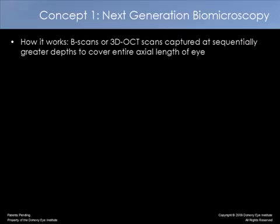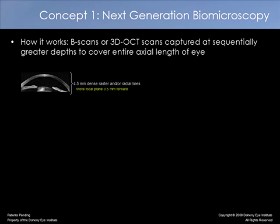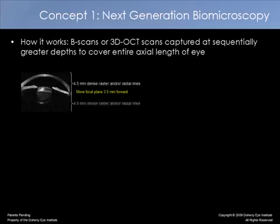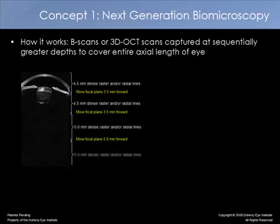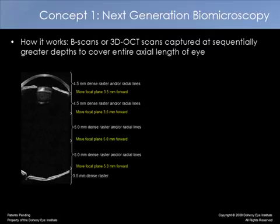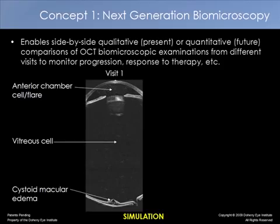How would it work? B-scans or 3D OCT scans could be captured sequentially at greater depths each time to cover the entire axis of the eye. What you see here is a scan of the anterior segment. The machine moves the focal plane back a few millimeters, scans the lens, moves back a few millimeters, scans the vitreous, and so on, until the machine has moved the focal point all the way back to the retina and choroid, capturing sequentially an entire set of B-scans for the eye.